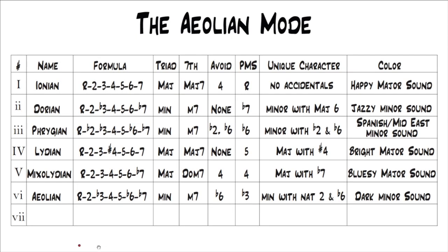We've added the Aeolian mode to this chart. It's root, 2, flat 3, 4, 5, flat 6, flat 7. The only difference between this and the Dorian mode is that you lower the 6 by half a step. All the minor modes create minor triads and minor 7 chords — every minor mode creates those chords. And the avoid note is the flat 6, but again, that doesn't mean don't play it; it just means you don't usually want to land on it and stay there — you want to resolve it and move off of that note.